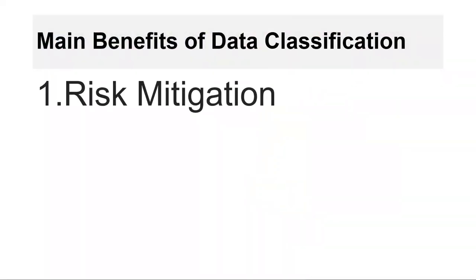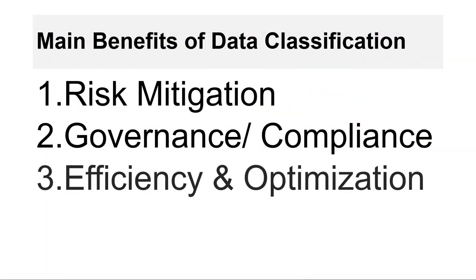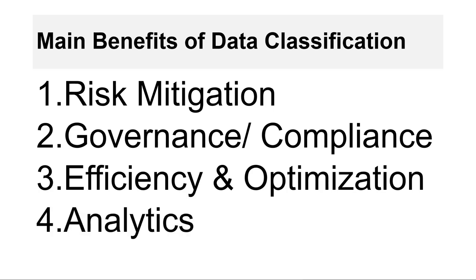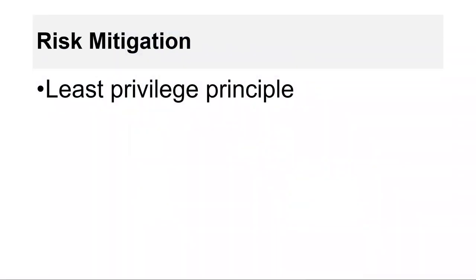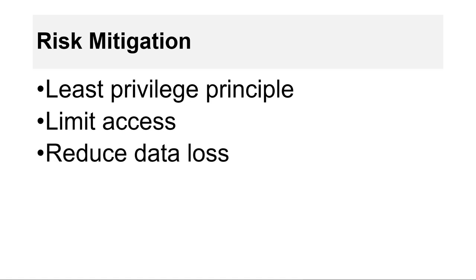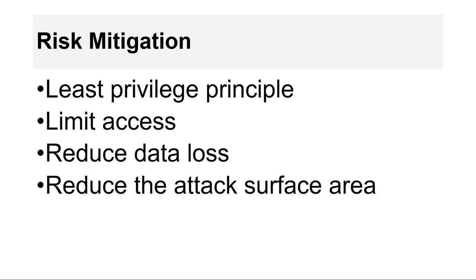Let's start with risk mitigation. If we know which data is high risk, medium, or low, we adopt the least privilege principle and ensure that only authorized employees have access to it. This way we can limit access to personally identifiable information and intellectual property, reduce data loss and unauthorized disclosure by ensuring data is stored in a dedicated, secure location — which at the same time reduces the attack surface area to sensitive data.